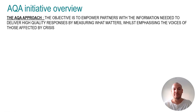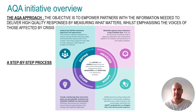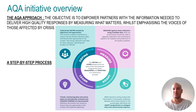About the AQA approach: the objective of the AQA initiative is to empower partners with the information needed to deliver high-quality responses by measuring what matters, while emphasizing the voice of those affected by crisis. It's a step-by-step process, a simple process with four steps. The first step is Define, where the key quality indicators are going to be chosen and contextualized.